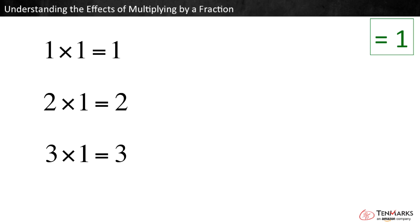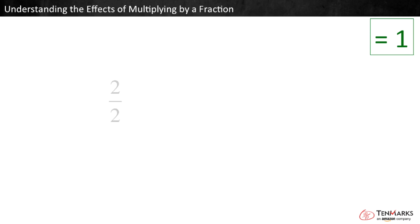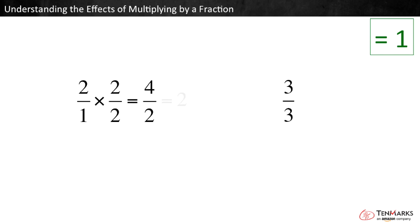Let's see if multiplying by a fraction equivalent to 1 also produces the starting number. A fraction is equivalent to 1 when its numerator and denominator are the same — for example, 2 halves and 3 thirds. We can see that when we multiply 2 wholes, shown here as 2 over 1, times 2 halves, we get 4 halves, which is the same as 2.